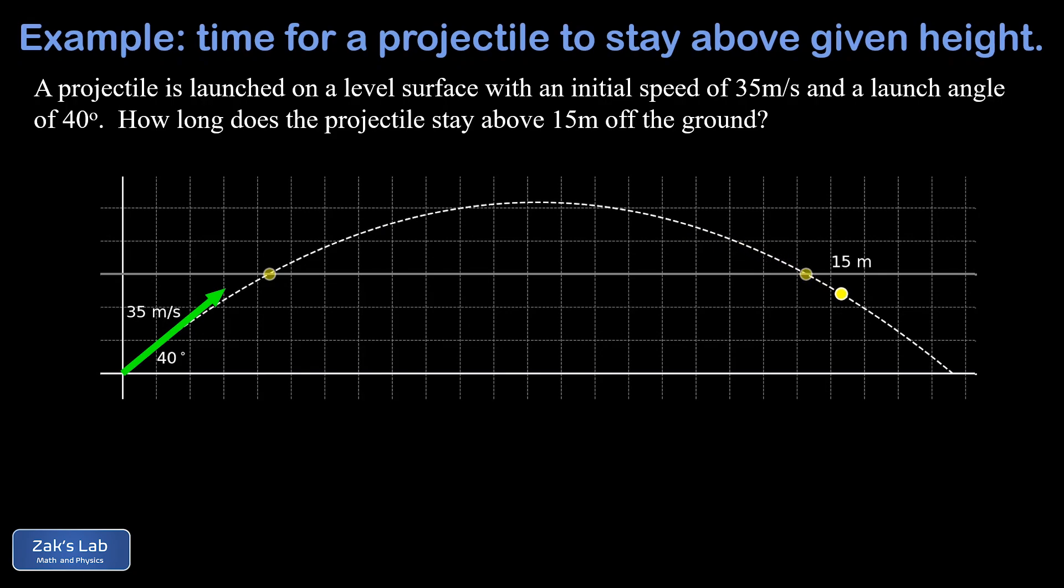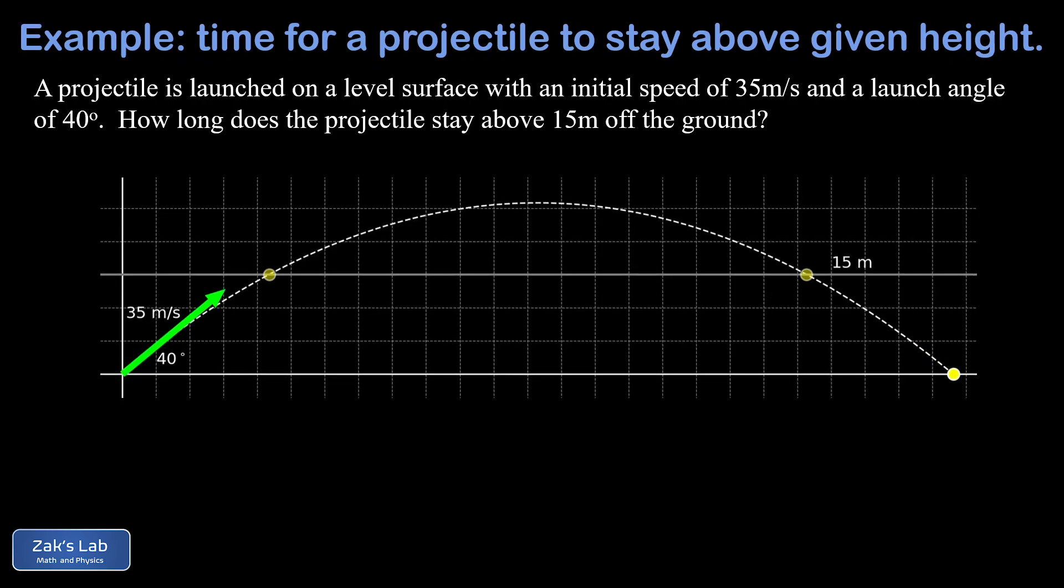But the question we're answering this time is how long will the projectile stay above 15 meters off the ground? So in the animation, we mark those two moments in time where the projectile crosses through the 15 meter mark. And then the strategy of the problem is to find out the time the projectile is at each of those locations, and then we'll just take the difference in those times.